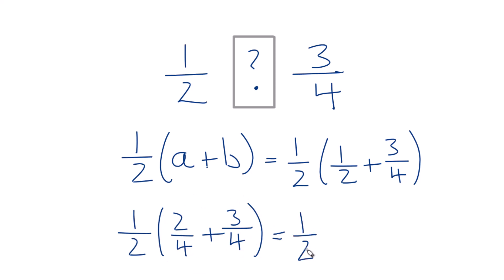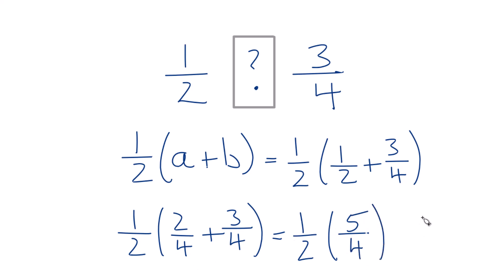We're going to multiply one-half by two plus three, which is five. When we add fractions with the same denominator, we just bring that across, and we end up with one-half times five-fourths.